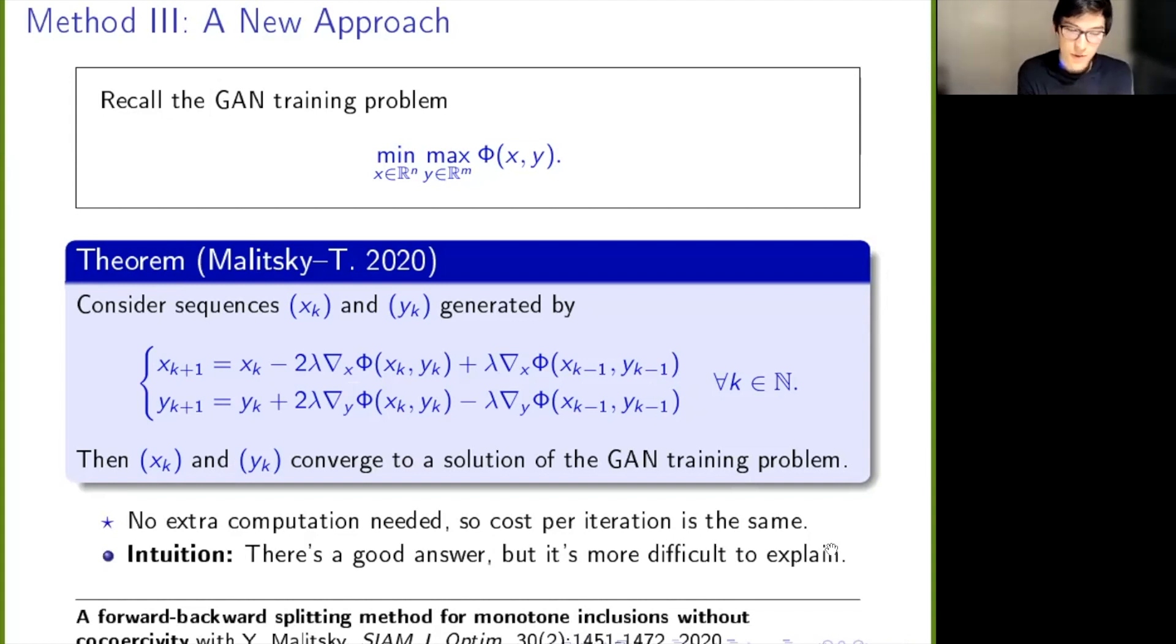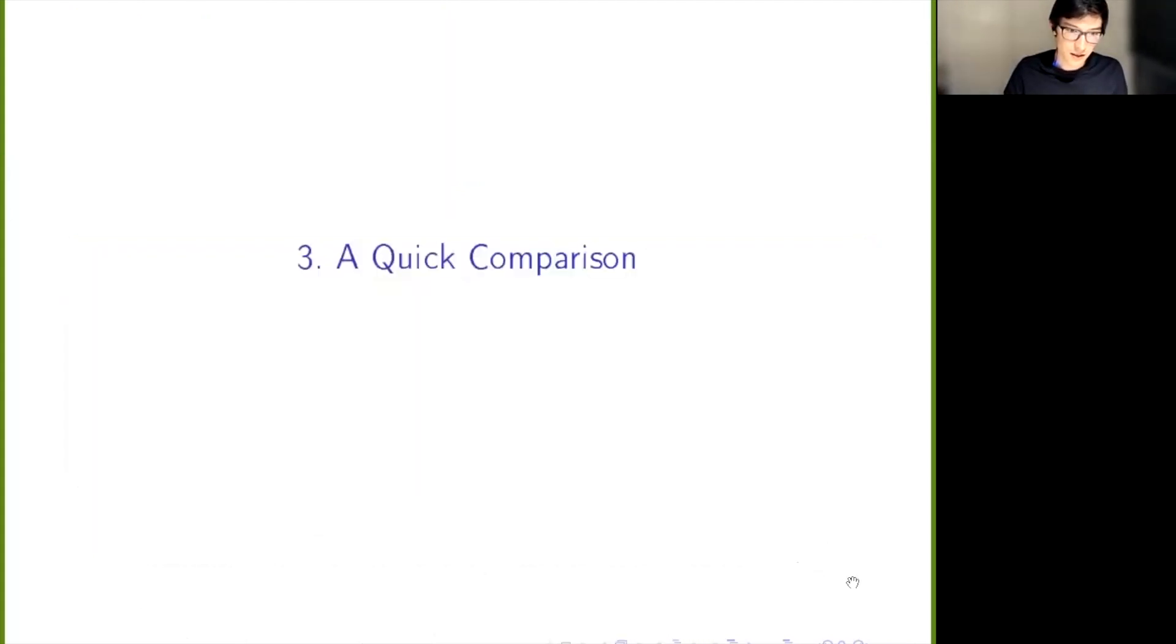This algorithm is good in the sense that you don't need any extra computation compared to the saddle gradient method. You have this extra term here, but it's always what you generated previously when you ran this algorithm, so it's something you've already computed. You just store it for one extra iteration and then you use it. The intuition for this method—there is a good answer, let me say, but it's a bit more difficult to explain in terms of how this makes sense. But let me just say there is a good answer of how it is. So that's a method that has some theory to explain why it should converge.